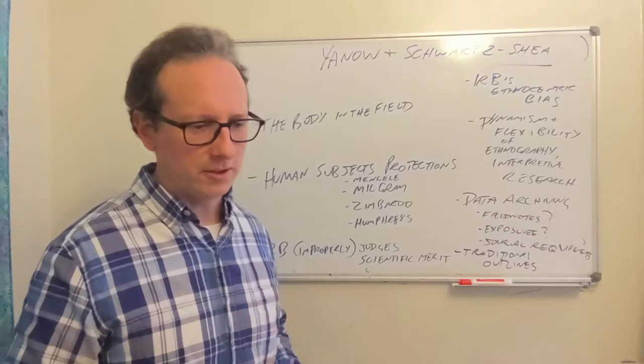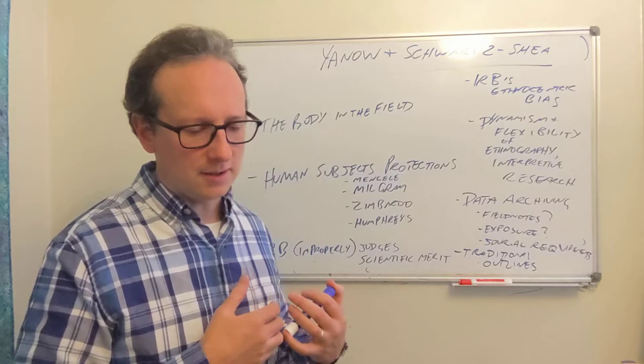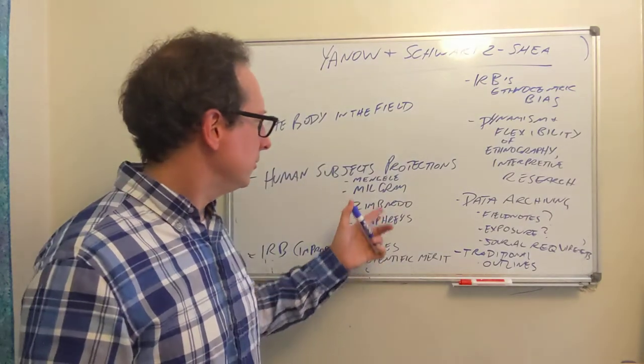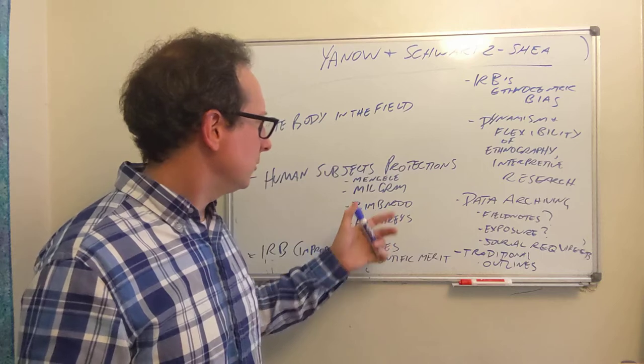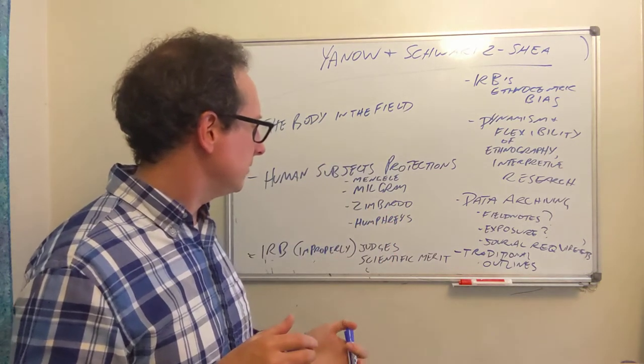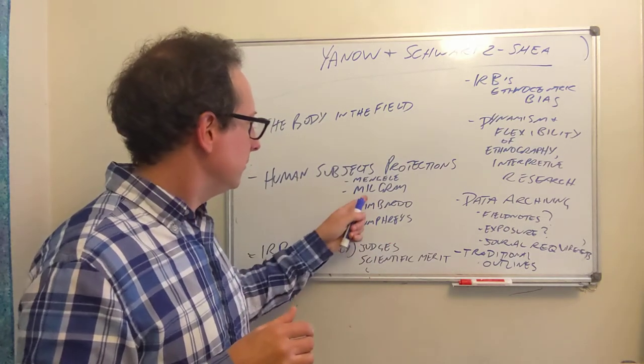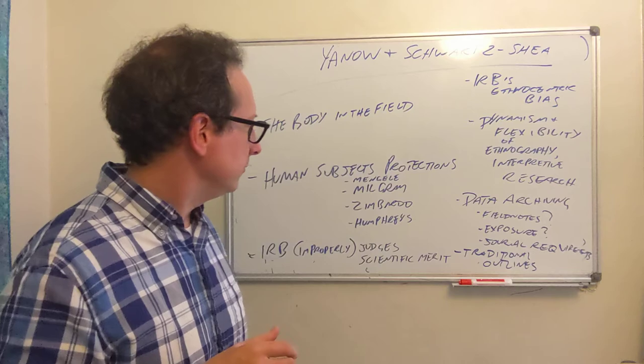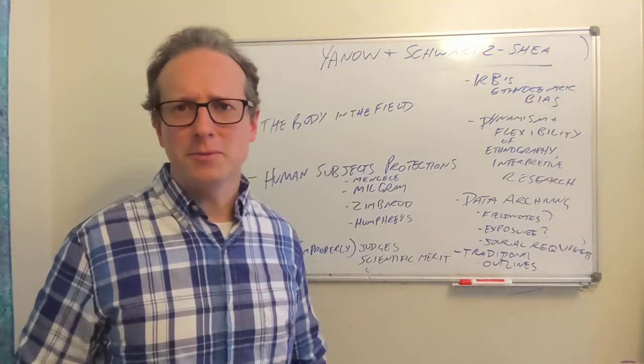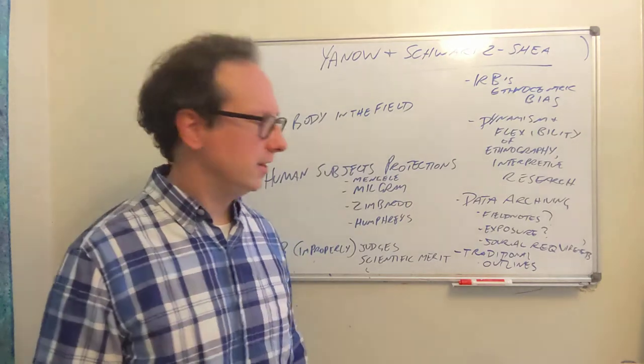But the argument of some interpretivists, I think, including Yanow and Schwartz-Shea is that these are not really representative of modern social science. And in fact, they were mostly natural scientists. With the exception of Humphreys, who was a sociologist, none of them were political scientists, certainly. And Milgram was a psychologist. I believe Zimbardo was also a psychologist, which sometimes gets lumped in with social science, but really considers itself in many ways a natural science.